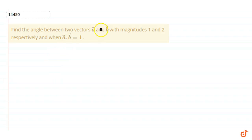Find the angle between two vectors a and b with magnitudes 1 and 2 respectively when a vector dot b vector is equal to 1. So we know a vector dot b vector, what is it?